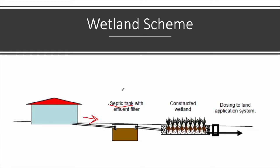It is very important to have a well-designed primary treatment because the constructed wetland, as a secondary treatment process, requires very low total suspended solids (TSS) and very low FOG (fat, oil, and grease). These two components can easily clog the wetland, potentially causing flooding. After secondary treatment, the wastewater can be further treated or safely disposed.